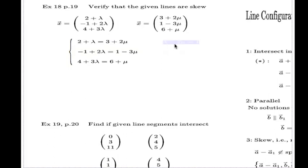What we do is bring all unknowns on one side, all knowns on the other side. So the first equation converts into λ - 2μ = 1, second equation converts into 2λ + 3μ = 2. Correct me if I'm wrong, there might be typos. Third equation: 3λ - μ = 2.